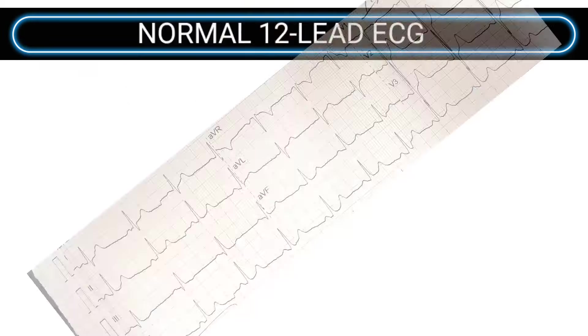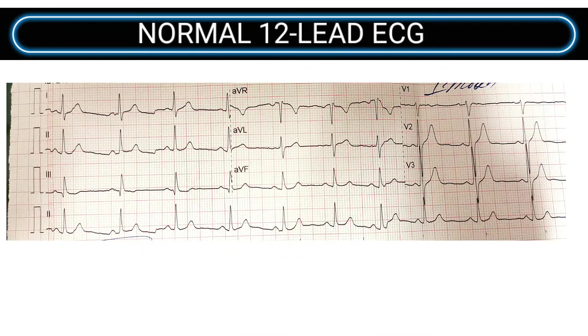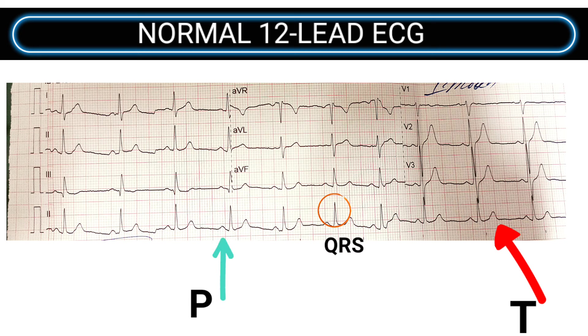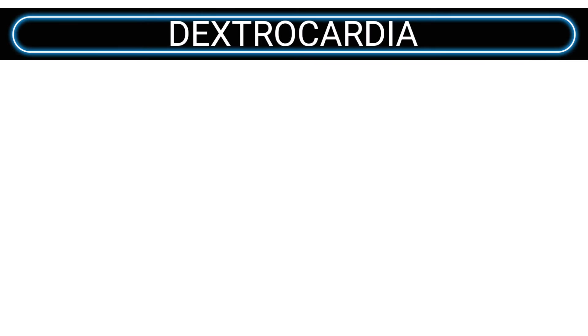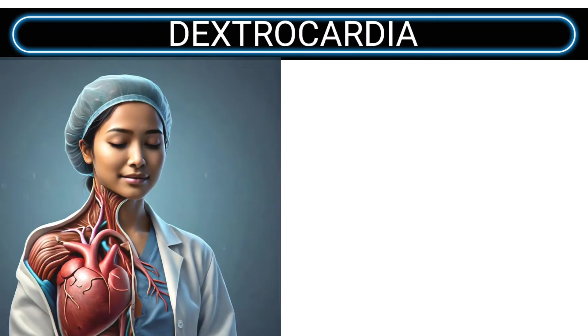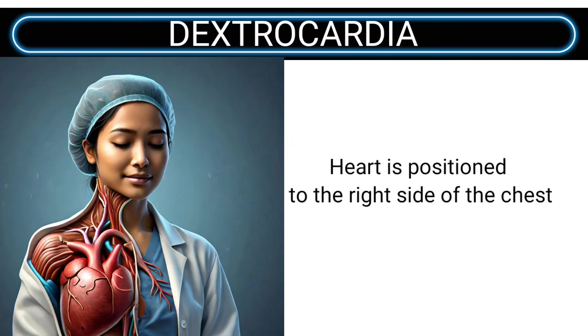First, let's quickly recap what a normal ECG looks like. Here you can see the P wave, QRS complex, and T wave. The QRS complex should predominantly be positive in leads one and two. Now let's talk about dextrocardia.